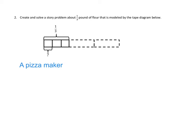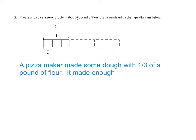A pizza maker made some dough with one third of a pound of flour. It made enough dough for three pizzas. How much flour was in each pizza?